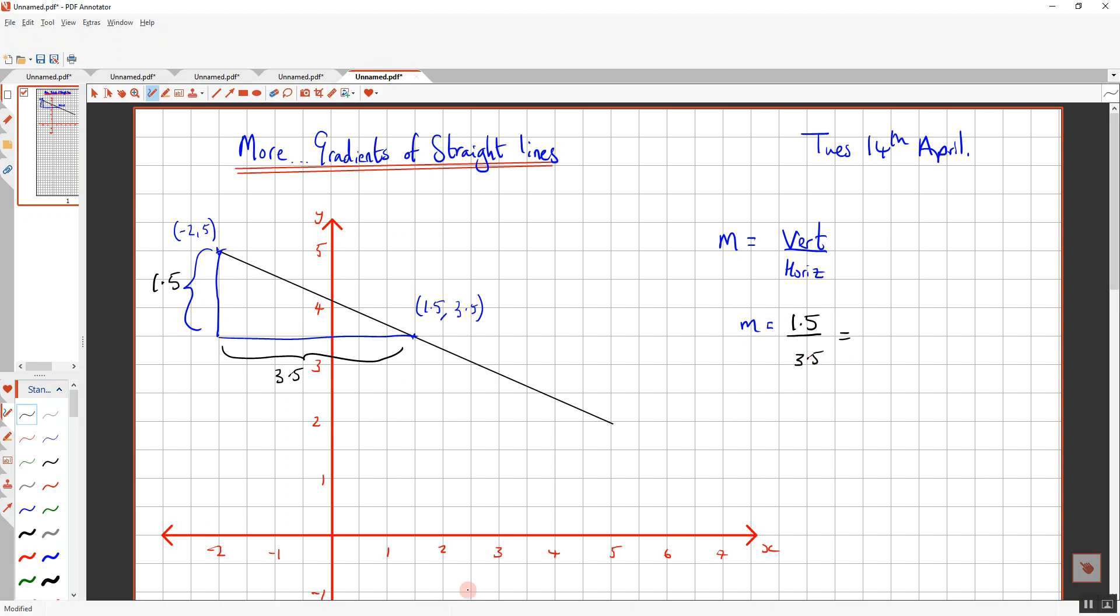So that gives us an answer of, if I put this into my calculator, which you should have with you, 1.5 divided by 3.5 is 3 over 7, which we can write as a decimal if we want as 0.429.